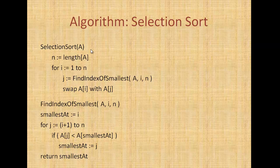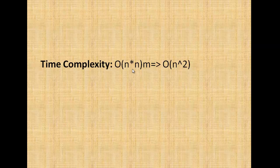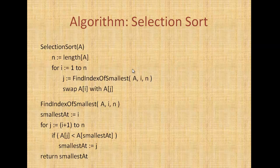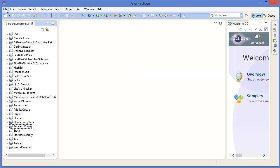So here is a loop: for i equal to 1 to n, and j finding the index of the smallest. This algorithm will find the minimum value from i to n. There are two loops — one is this for loop, and another one is inside the find-index-of-smallest algorithm, which also has a for loop. So the time complexity will be O(n squared).